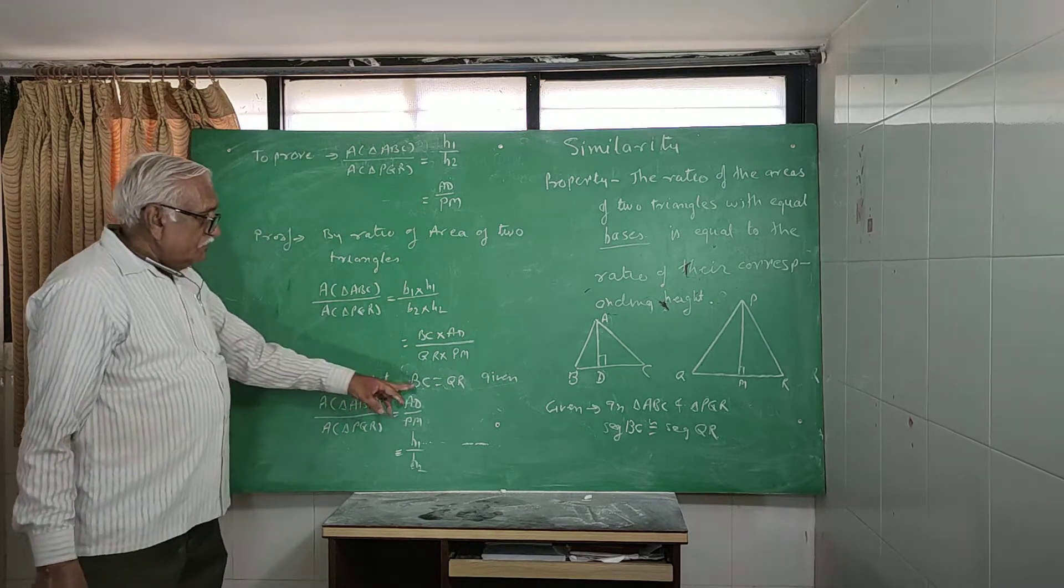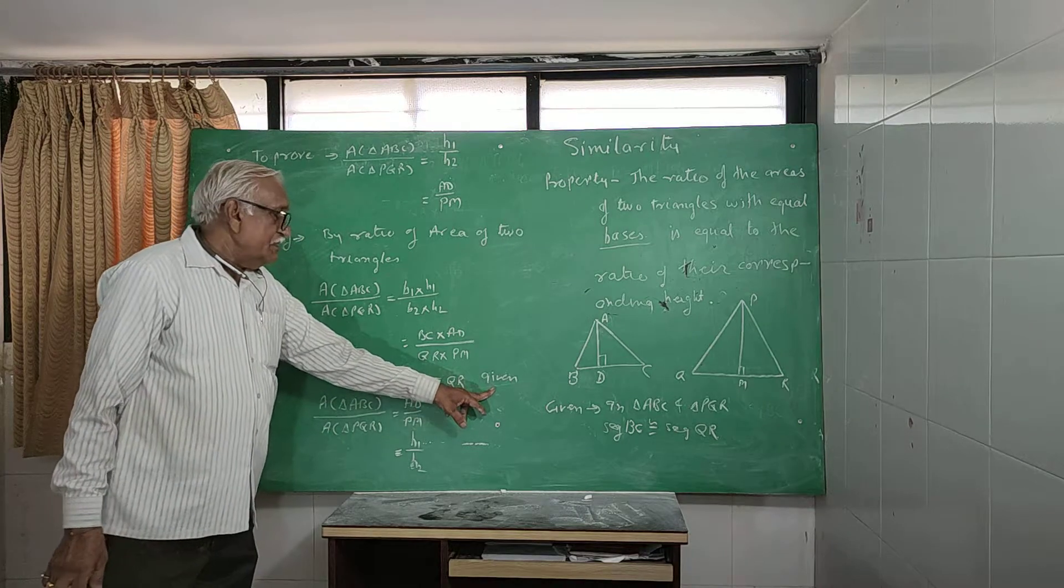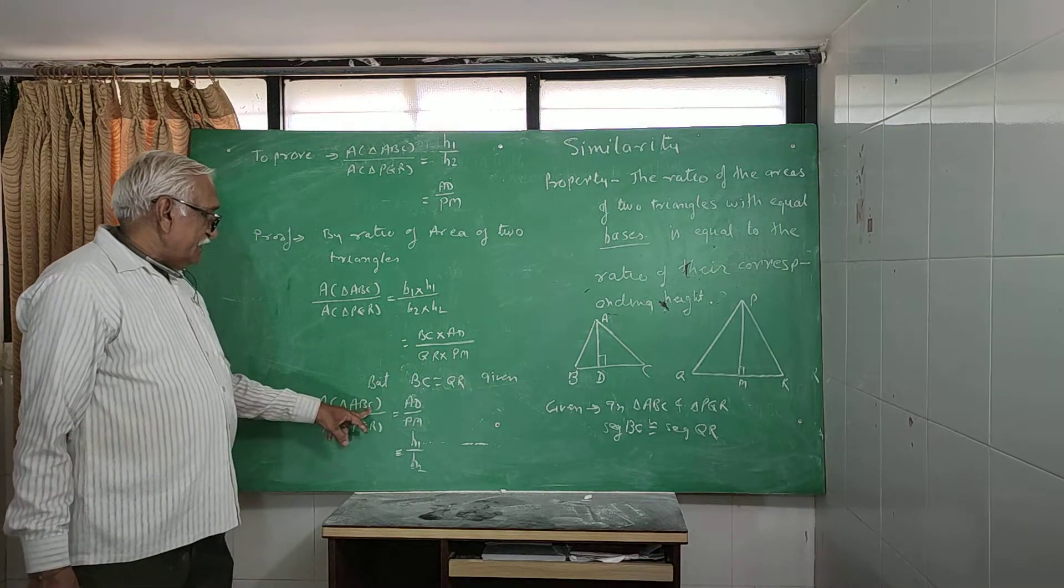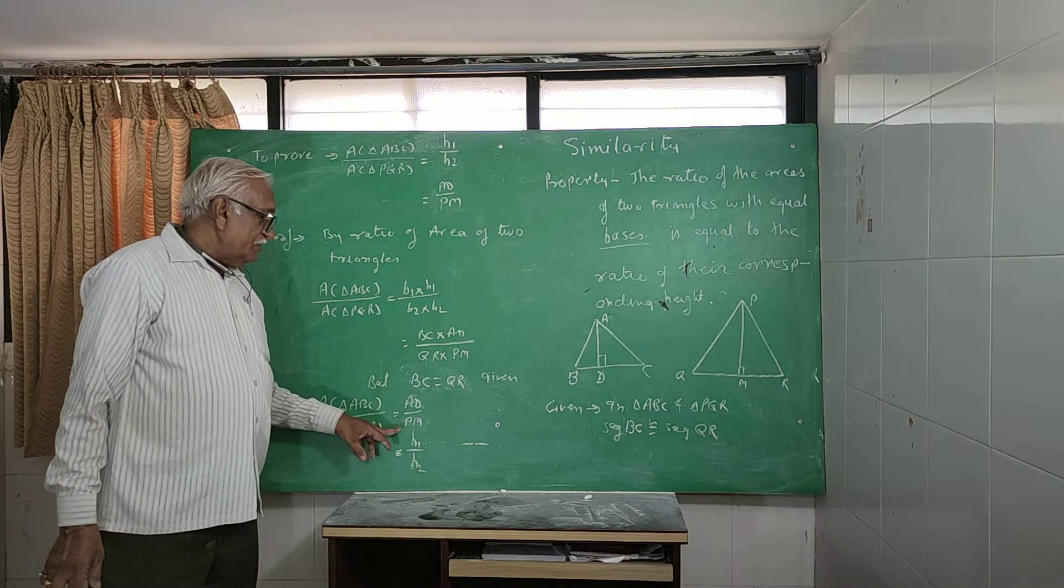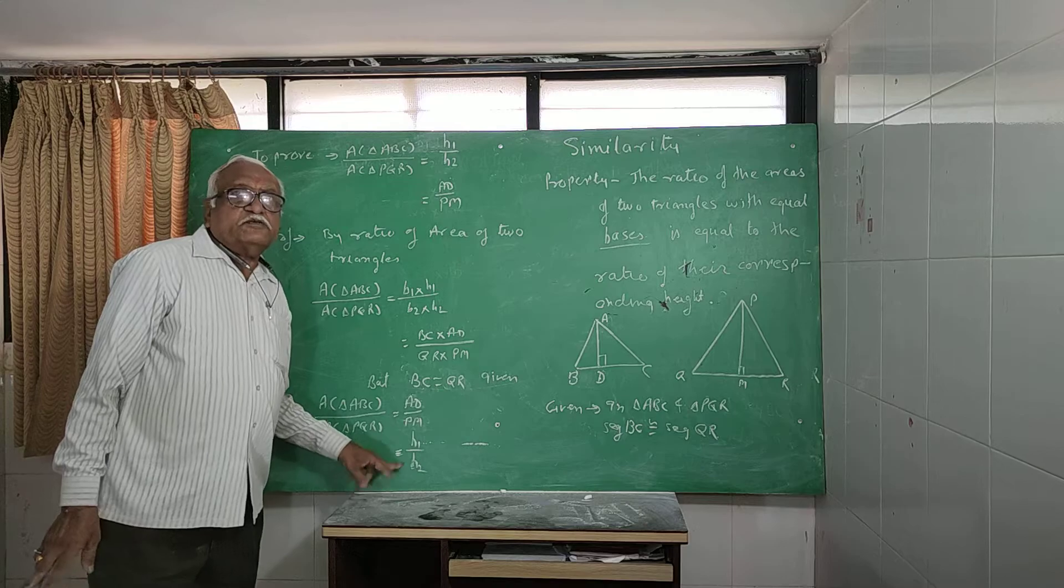But BC equal to QR given, cancel to get area triangle ABC upon area triangle PQR equal to AD upon PM, that is H1 upon H2.